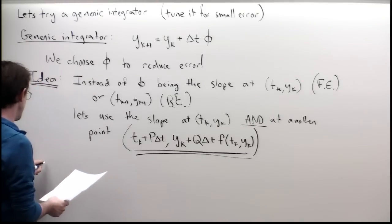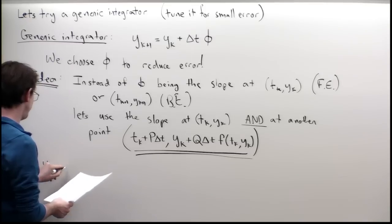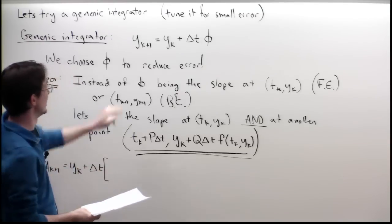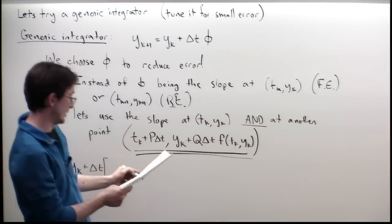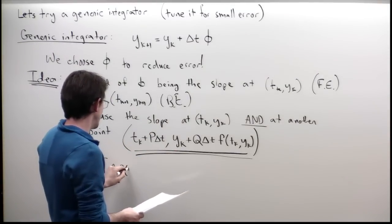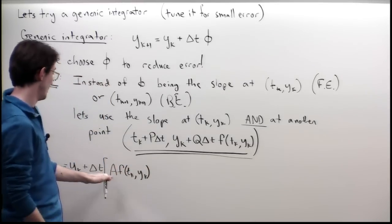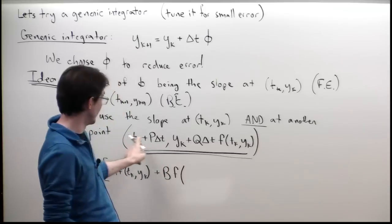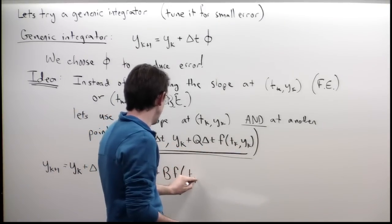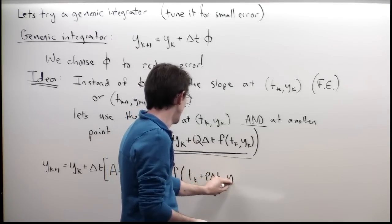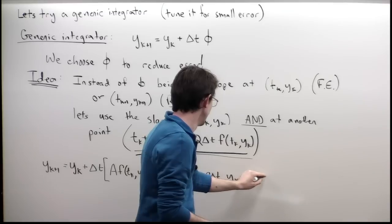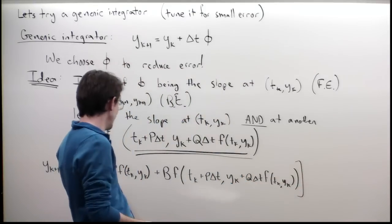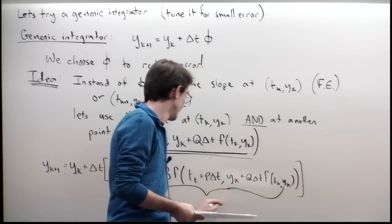So this gives me a new integration scheme: y_{k+1} equals y_k plus delta-t times phi, where phi is A times F(t_k, y_k) plus B times F evaluated at (t_k + P·delta-t, y_k + Q·delta-t·F(t_k, y_k)). If I make B equal to zero and A equal to one, I just recover forward Euler.